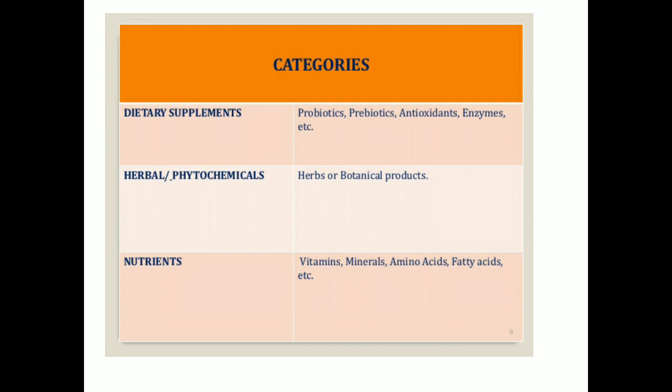The basic categories of Nutraceuticals available in the market are three: first, dietary supplements — examples include probiotics, prebiotics, antioxidants, and enzymes; second, herbals and phytochemicals — herbs or botanical products used as Nutraceuticals; and third, nutrients — examples include vitamins, minerals, amino acids, and fatty acids.